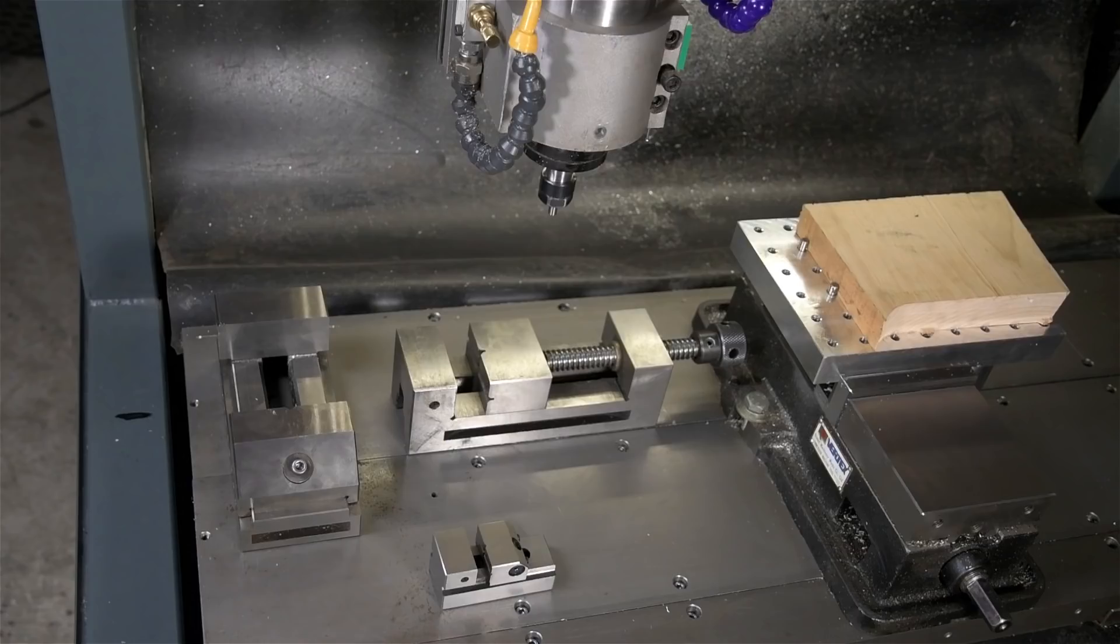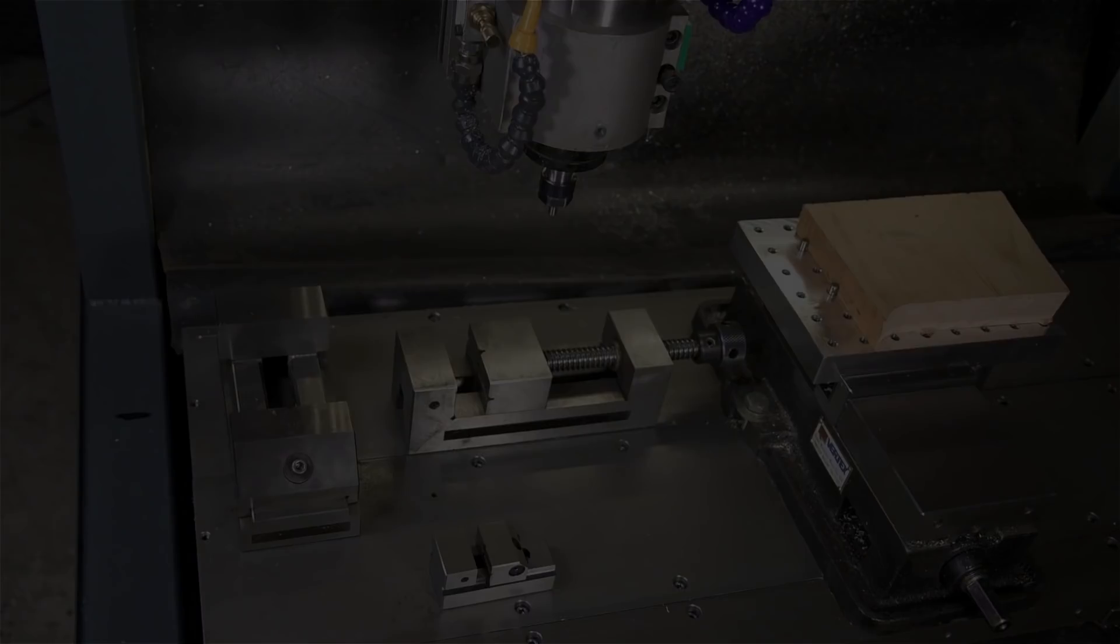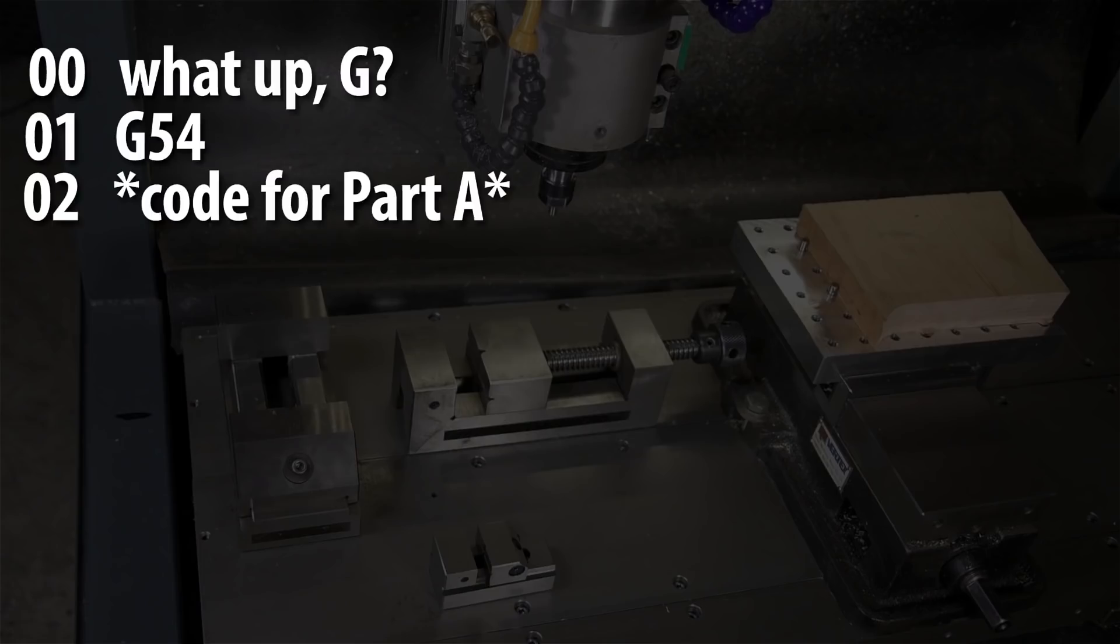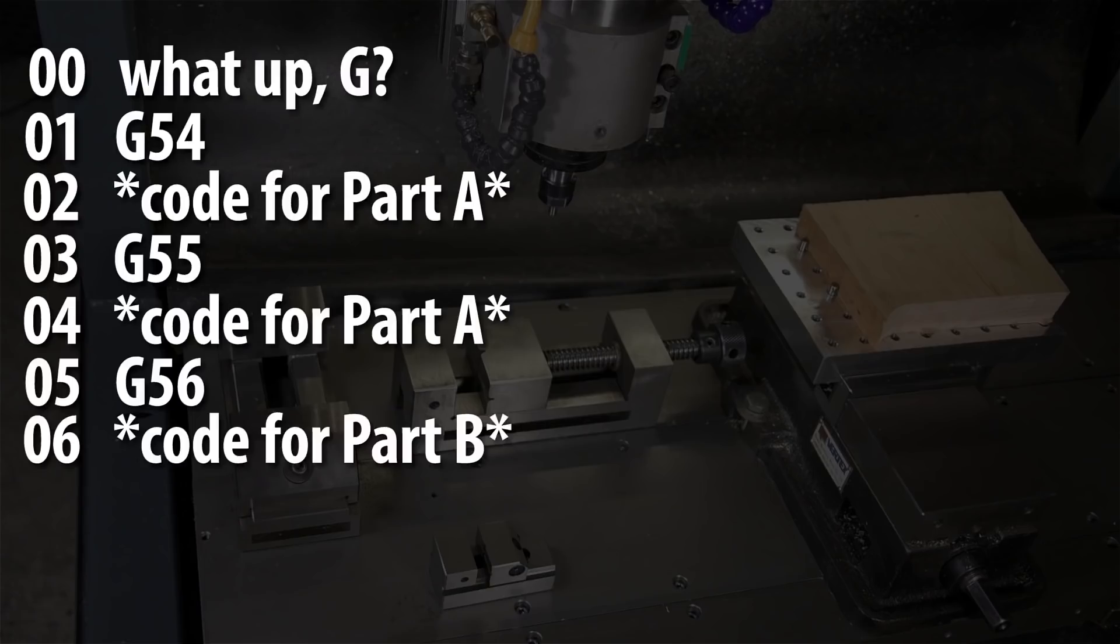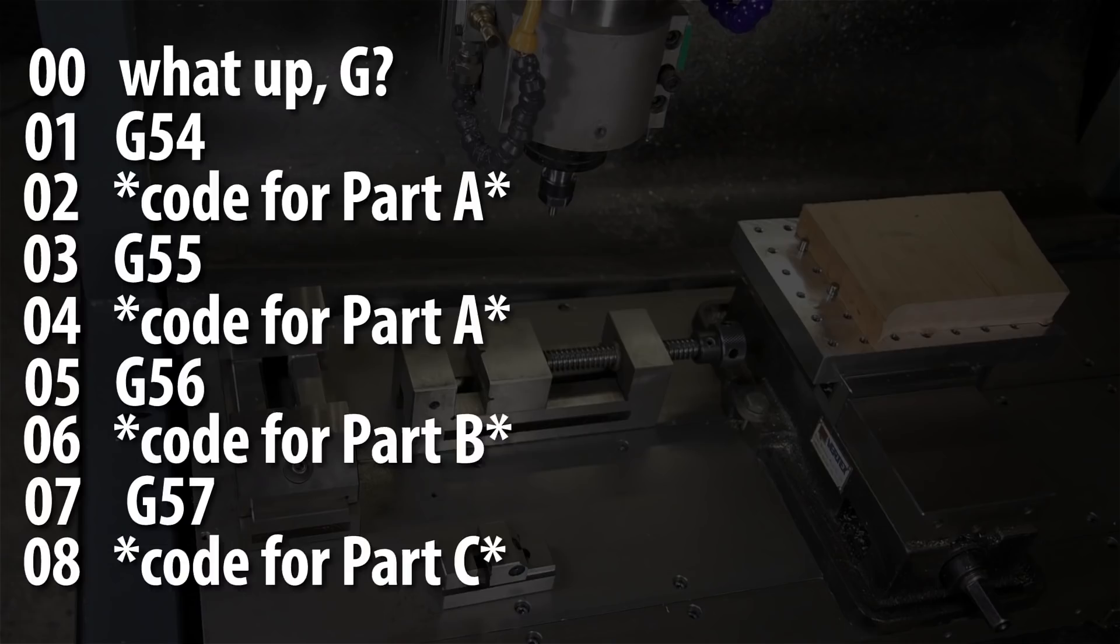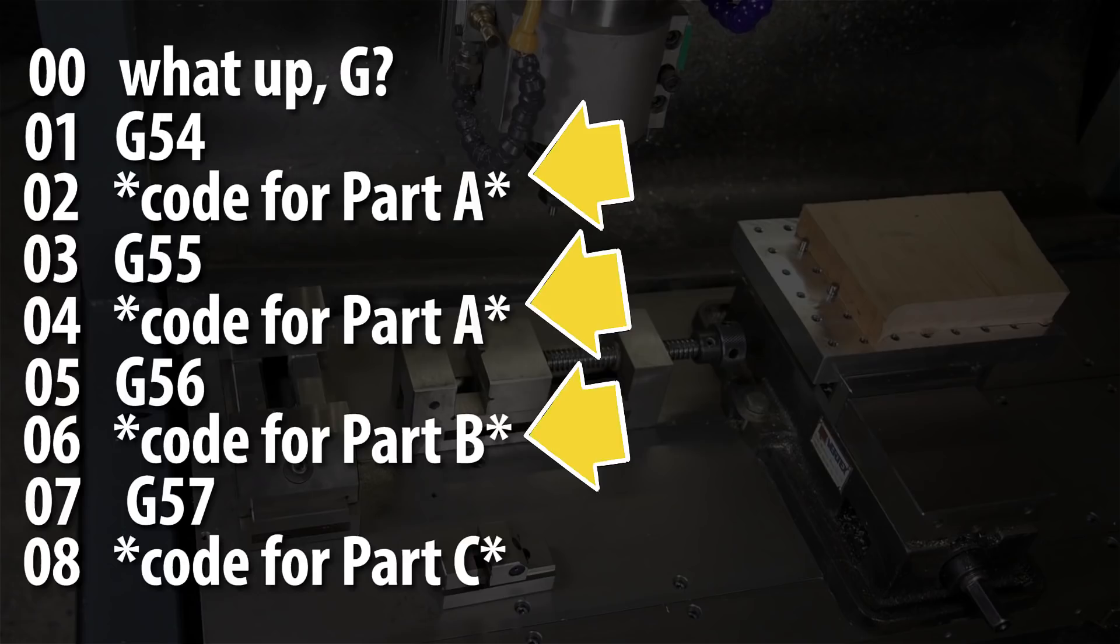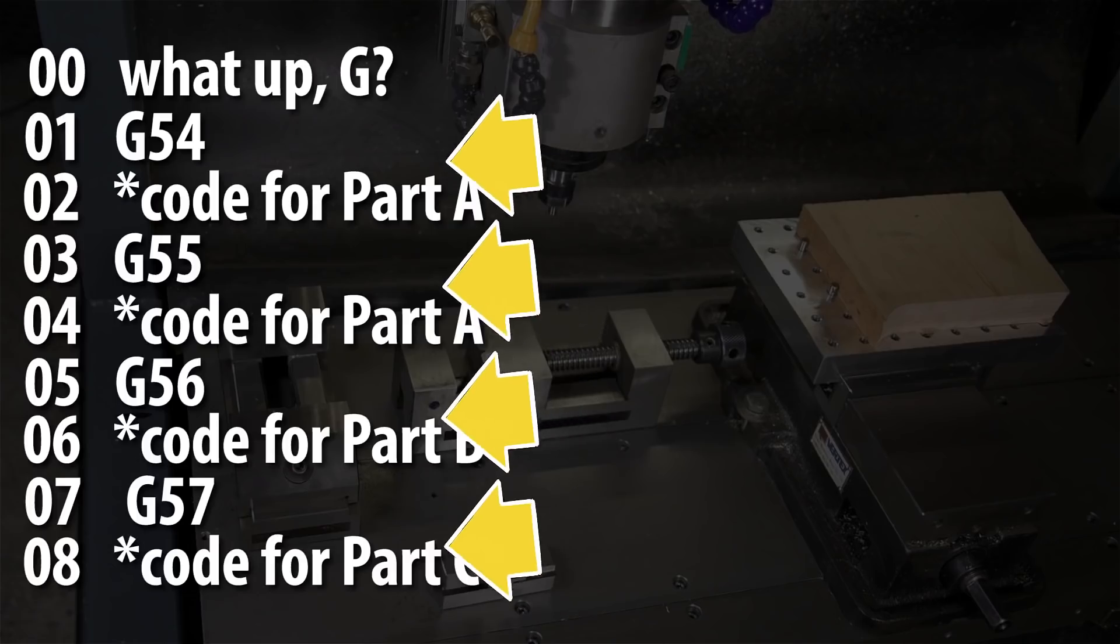For example, sample code might look something like this: What up G? That's how I like to start all my G-code. G54 make part A, G55 make part A, G56 make part B, G57 make part C. So now if we loaded material into all the vices and maybe had an automatic tool changer, we could walk away and the machine would make four parts: two copies of part A, one of part B, and one of part C.